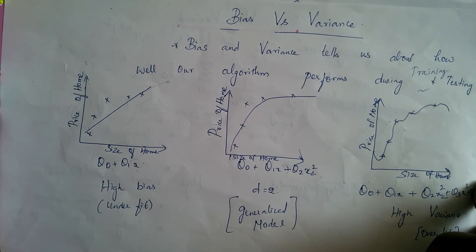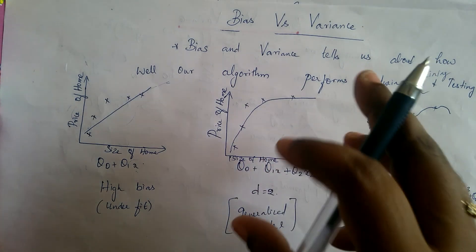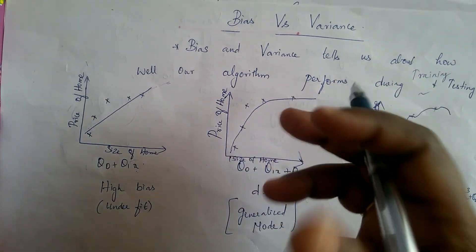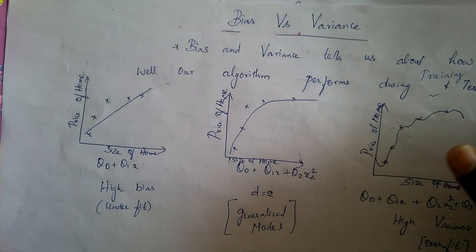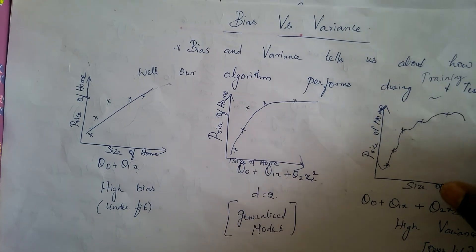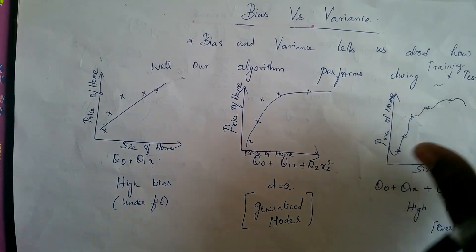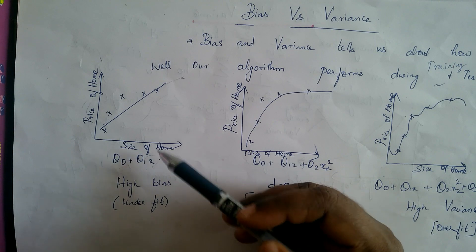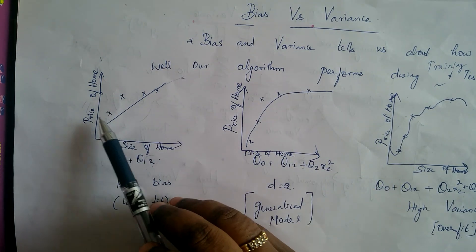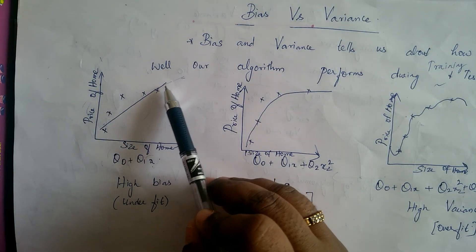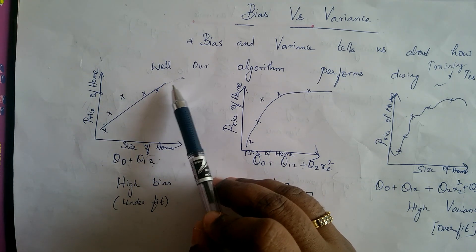Now we'll see what happens during training and testing — what are the various factors that might affect our model. Let's look at this graph first. This is a linear regression best line of fit that we saw in the last lecture.